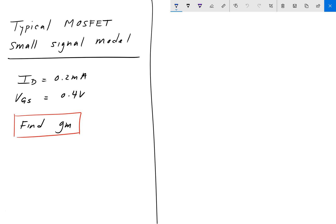Hey guys, welcome back to engineering education. For this next problem, we are told that we have a typical MOSFET small signal model. We're not shown the circuit at all, and we're told that the drain current of this circuit is 0.2 milliamps and VGS is 0.4 volts.